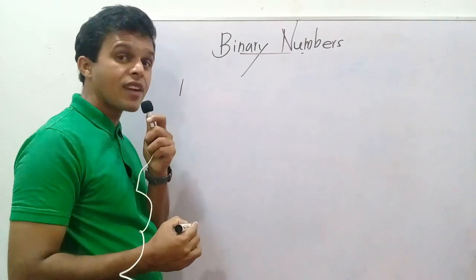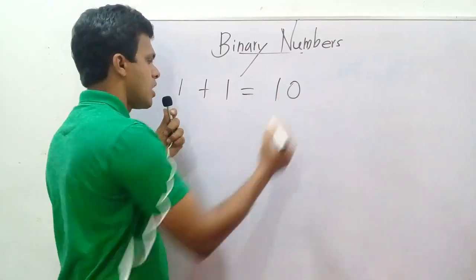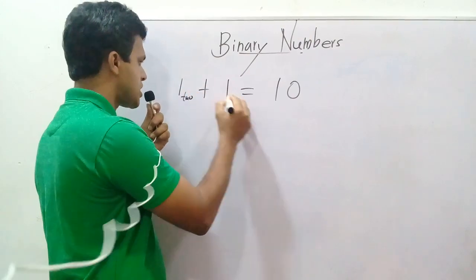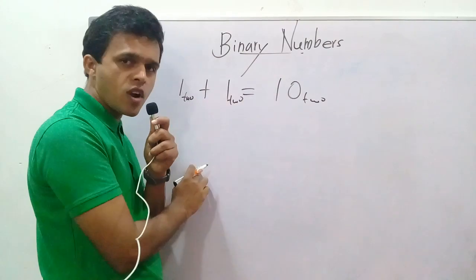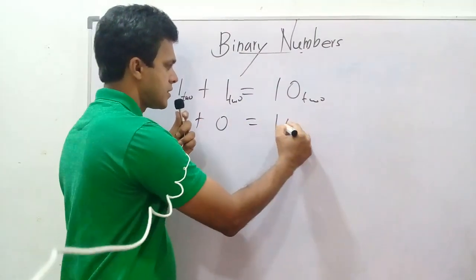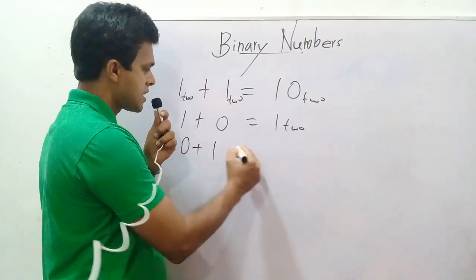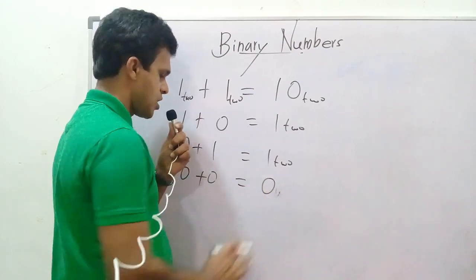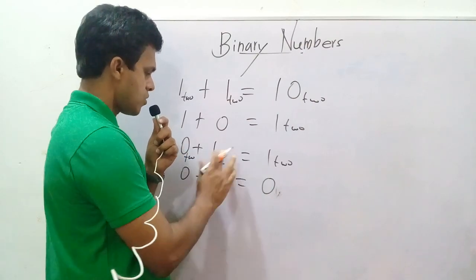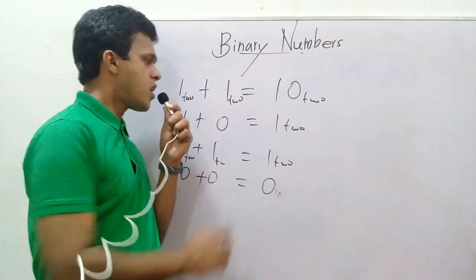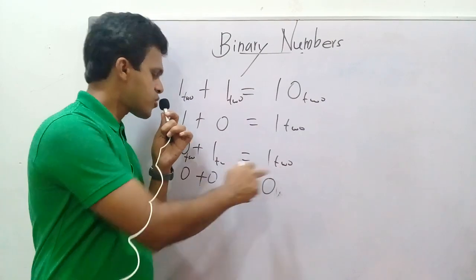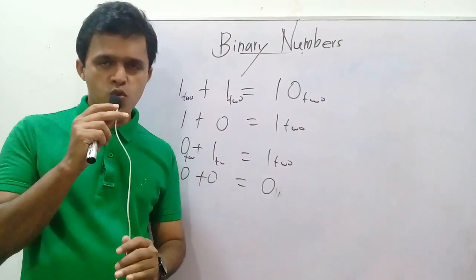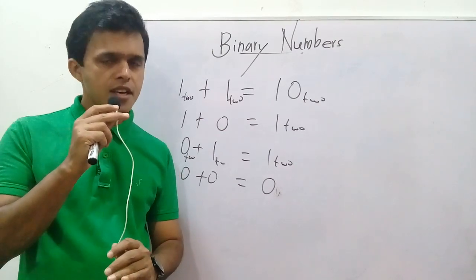When you add binary numbers you should know these relations. The base is two, so: one plus one equals one-zero (10); one plus zero equals one; zero plus one equals one; zero plus zero equals zero.